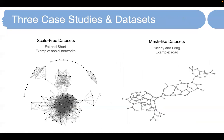We run our case studies on two types of datasets. The scale-free datasets have low diameter and a high average degree; they are often flat and short, and are generated from social networks. The other type is the mesh-like datasets, which have high diameter and a low average degree; they are often skinny and long.